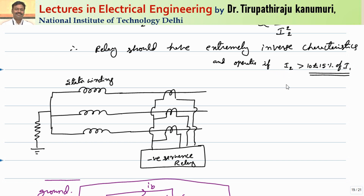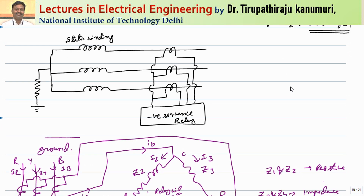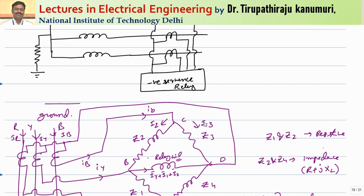For detection of negative sequence currents, three CTs are connected to the stator winding in star configuration — only one side is required since this is not differential protection. These are connected to a negative sequence relay, which operates a relay having extremely inverse current characteristics.